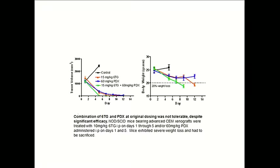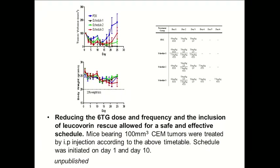We thought maybe we could use a combination of 6-thioguanine and pralatrexate. When we used optimum doses of these drugs, we got very nice tumor regression. But as you can see in the green line, the tumors disappeared rapidly but the animals died because it was a toxic combination. So by looking at different dose schedules of 6-thioguanine and adding leucovorin rescue to the pralatrexate, we developed a safe and effective schedule in the CEM xenograft.